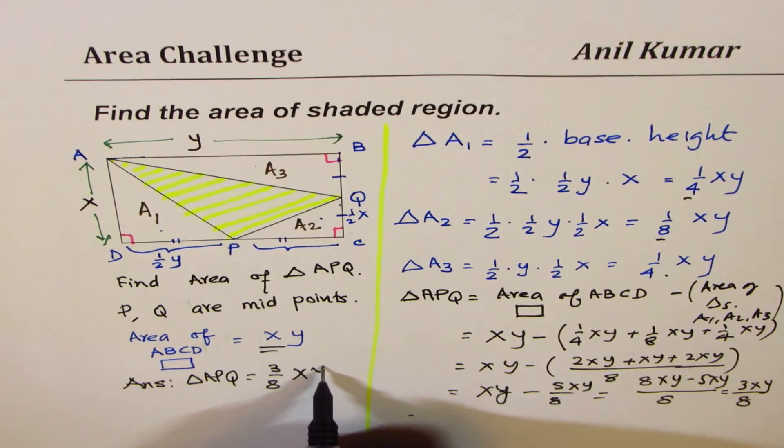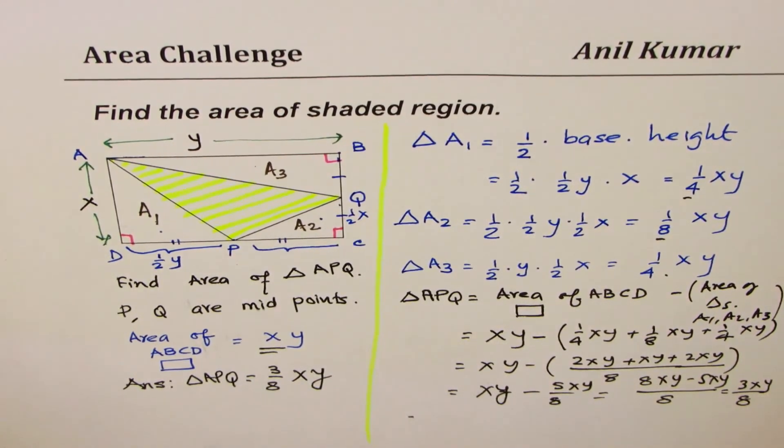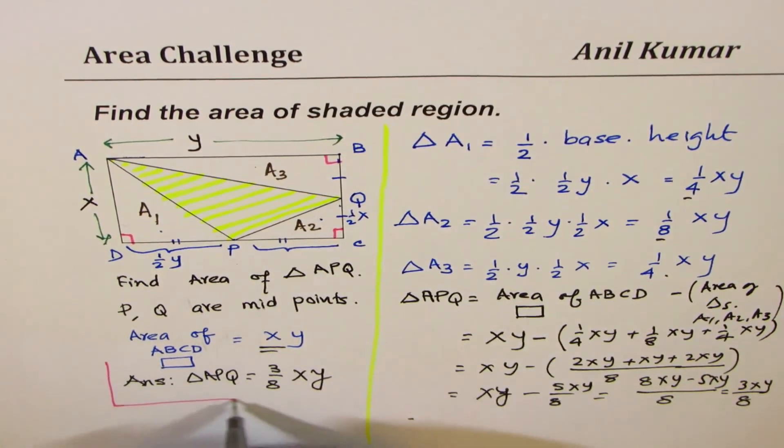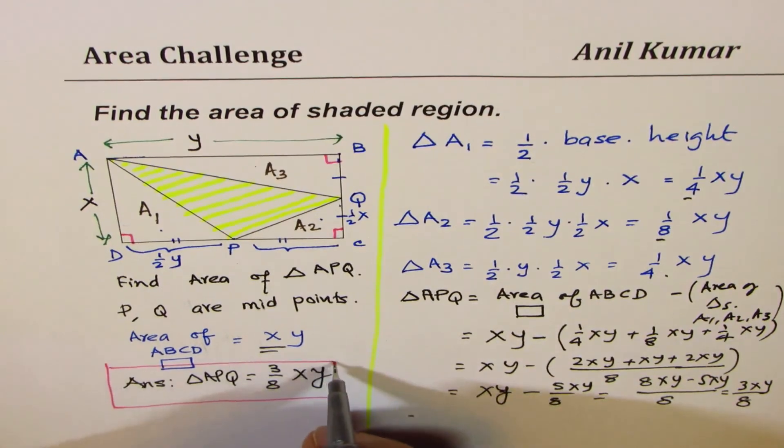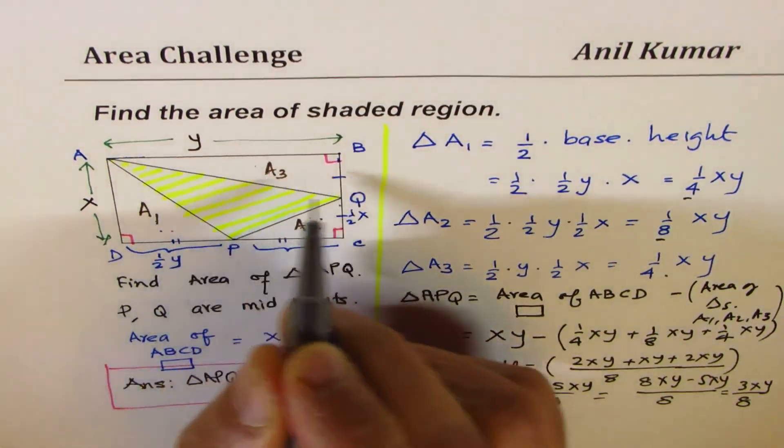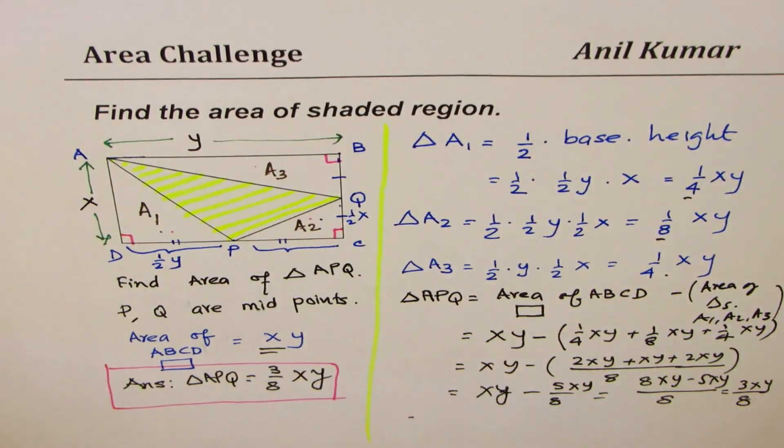So that is how you could actually solve such a question. Take away the area of small triangles from the big rectangle to get the result. I hope it makes sense.